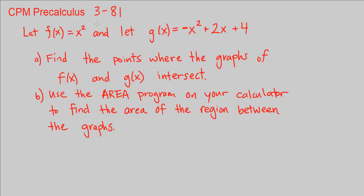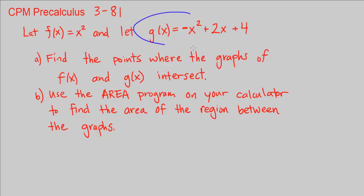This is CPM Pre-Calculus Chapter 3, Number 81. We have two functions: f of x is equal to x squared, and g of x is equal to negative x squared plus 2x minus 4.